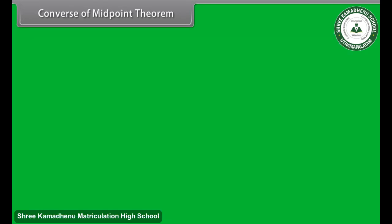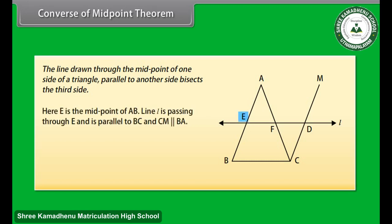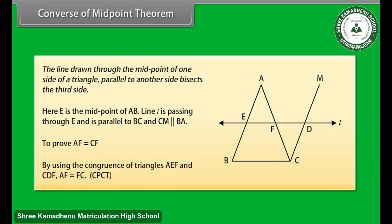Converse of the midpoint theorem. The converse states that the line drawn through the midpoint of one side of a triangle, parallel to another side, bisects the third side. Look at this figure. Here E is the midpoint of AB, line L is passing through E and is parallel to BC, and CM is parallel to BA. We have to prove that AF is equal to CF. By using the congruence of triangles AEF and CDF, we can prove that AF is equal to FC.